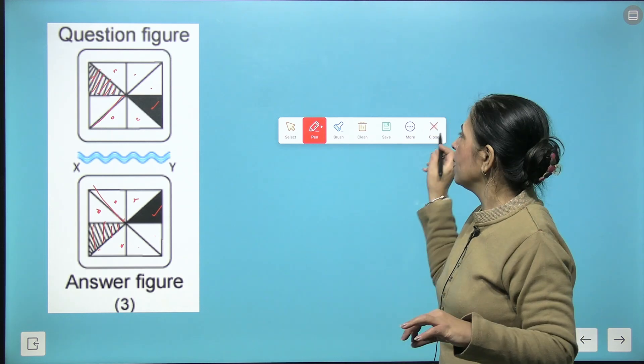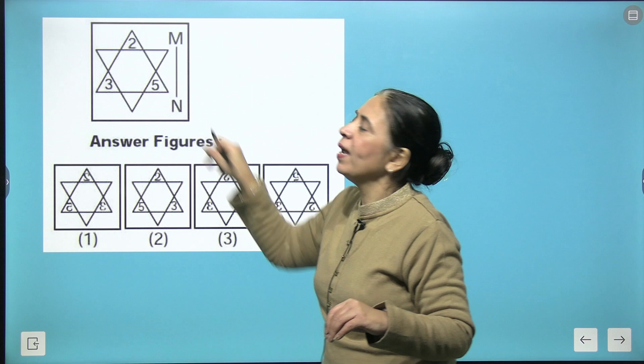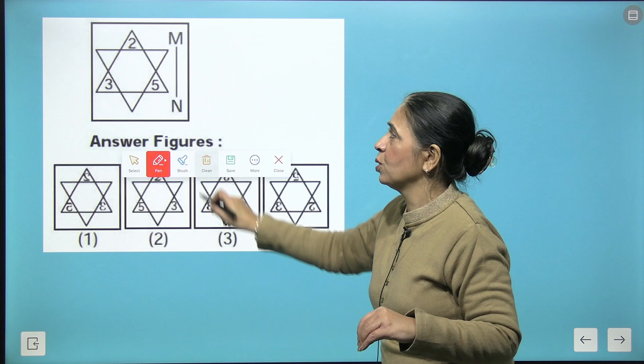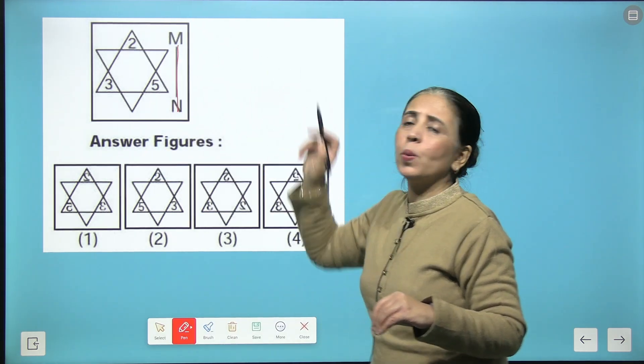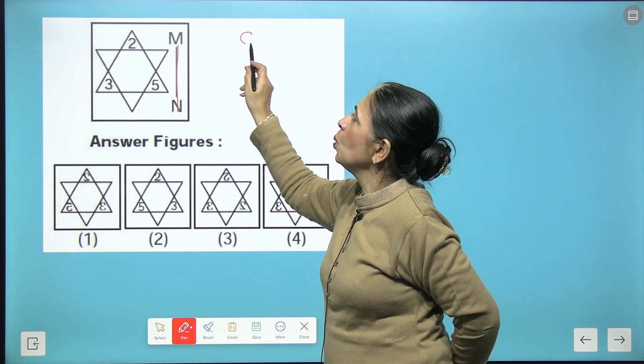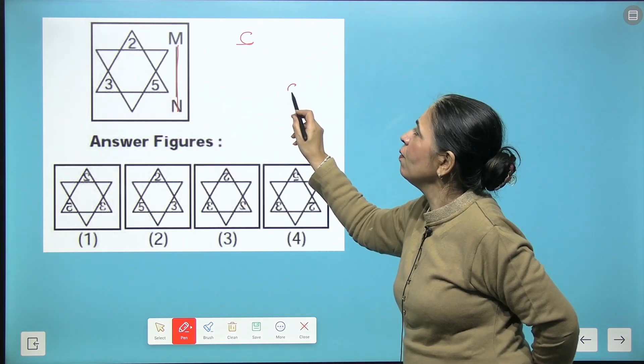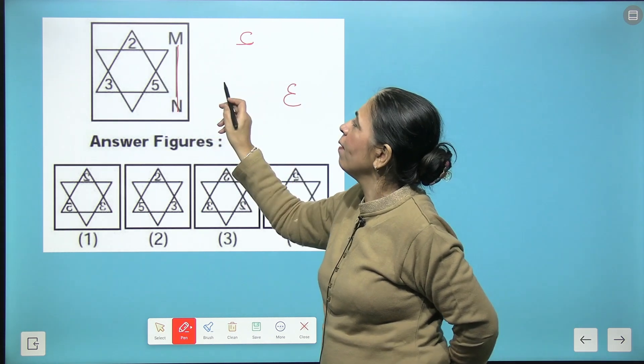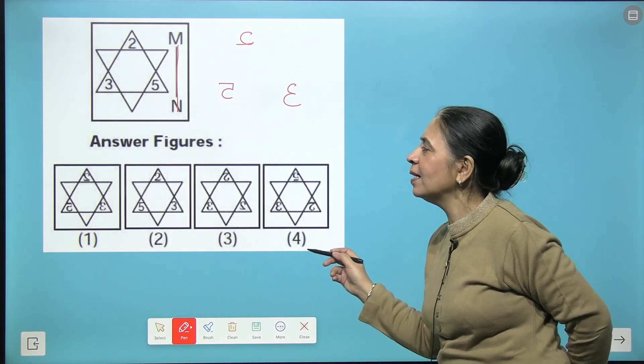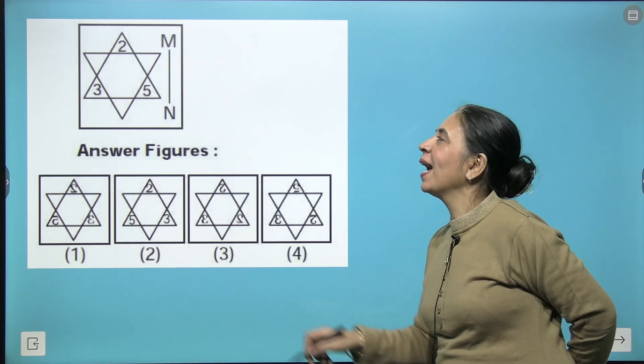Now a few more examples. So here let us see, we have a star and on this star certain numbers are embossed, and this is the mirror. So we need to create a mirror image on the right. Here we have two, this two will come like this. Then we have three, so this three will go like this, and here we have five, this five will look like this. Now can you help me to get the right answer? Beautiful! One is the correct answer. Believe me, you are going to excel now.